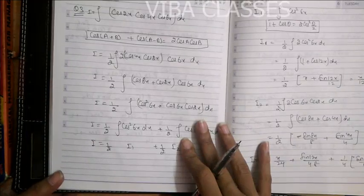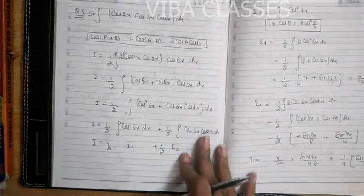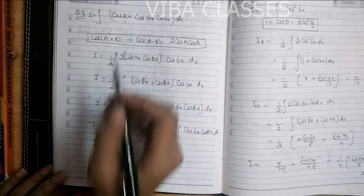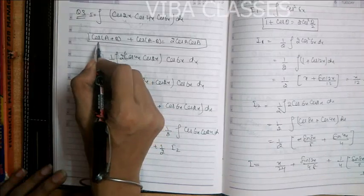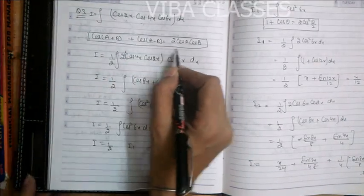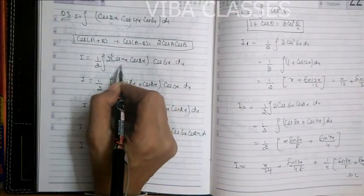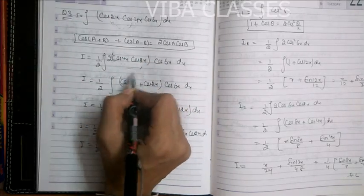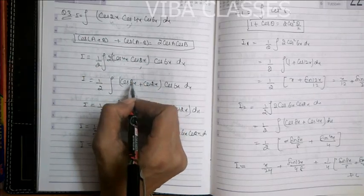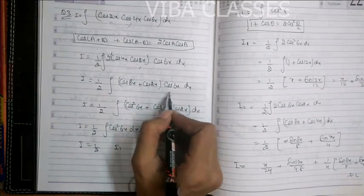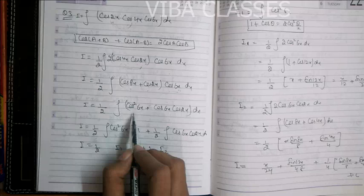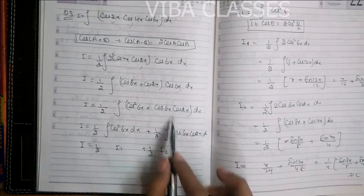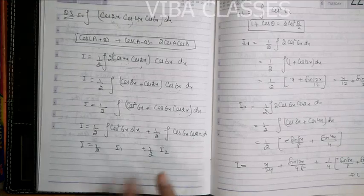Question number 3 और 2 में बस इतना फर्क है कि जो चीज 2 में given थी — pairing 2,2 की करेंगे. cos(4x), cos(2x): पहले देखना पड़ेगा cos वाले formulas — cos(a+b) + cos(a-b) = 2 cos(a) cos(b). दोनों की pairing करी, cos(4x) को आगे लिखा. 2 से multiply और divide करा. This becomes cos(a+b) + cos(a-b) — bracket के बाहर cos(6x) चल रहा था. That becomes cos²(6x) and cos(6x)cos(2x). दोनों पर अलग-अलग integration apply करी: half cos²(6x) = i1, half cos(6x)cos(2x) = i2.